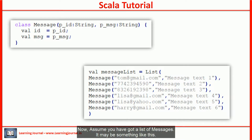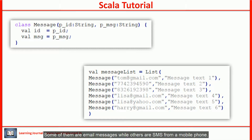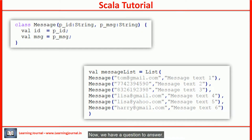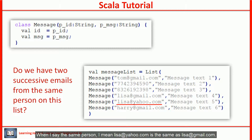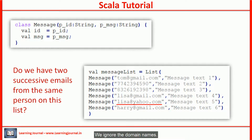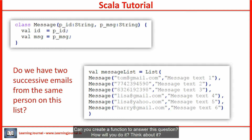Now assume you have a list of messages — some are email messages while others are SMS from a mobile phone. We have a question to answer: do we have two successive emails from the same person on this list? When I say the same person, I mean lisa@yahoo.com is the same as lisa@gmail.com — we ignore the domain names. Can you create a function to answer this question?